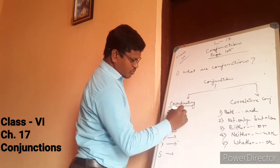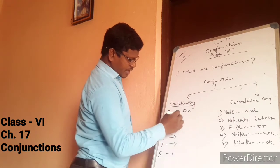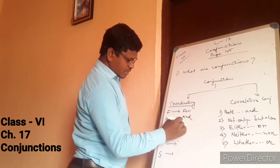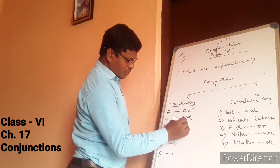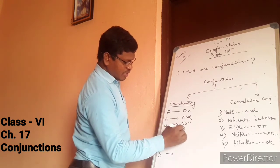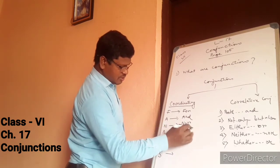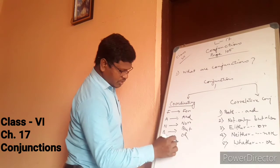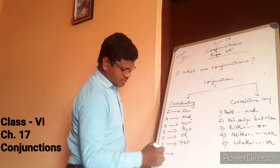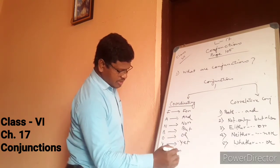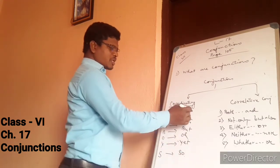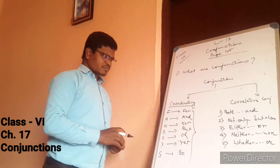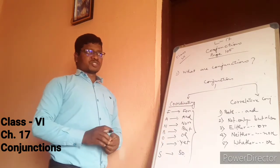The short form is FANBOYS. F stands for 'for', A stands for 'and', N stands for 'nor', B stands for 'but', O stands for 'or', Y stands for 'yet', and S stands for 'so'. These are the examples of co-ordinating conjunctions.